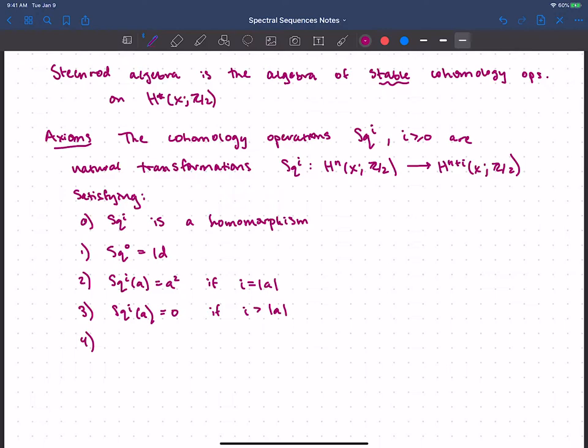And we said that this was a homomorphism in the sense that it distributes over sums. So the Cartan formula tells us how to deal with products. It says that if you want to take square K of A times B, well, you can do that. You just got to split things up. So you'll multiply square I of A times square K minus I of B, and then range over all of those so that I'm just splitting these up into sums of degrees that add to K.